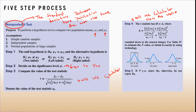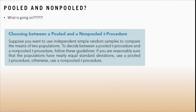Pooled versus non-pooled: to decide between a pooled t-procedure and a non-pooled t-procedure, follow these guidelines — if you're reasonably sure the populations have equal standard deviations, use pooled t; otherwise use non-pooled. For us we're always going to default to non-pooled. We're not going to straight off the bat assume that the population standard deviations are equal.